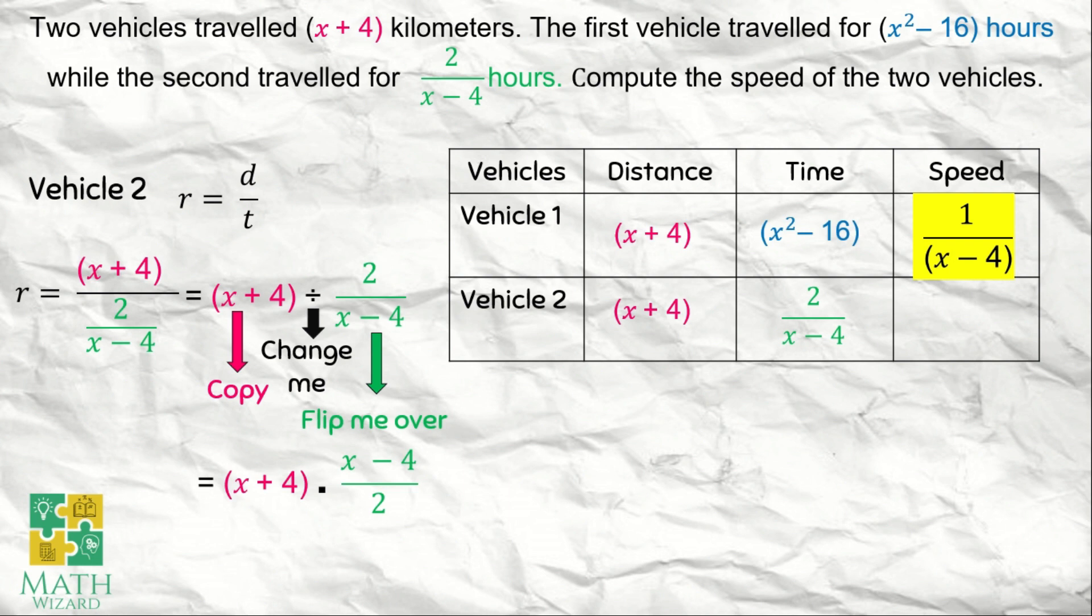We proceed to multiplication of rational algebraic expressions. How do we multiply? Numerator times numerator and the denominator multiplied to the denominator. This becomes x plus 4 times x minus 4 over 2. We'll use the FOIL method to simplify the numerator.